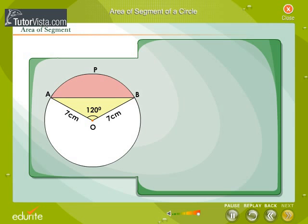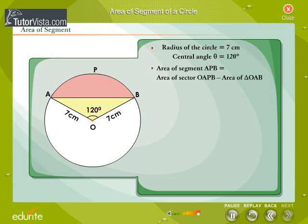Let's find the area of a segment, given the radius of the circle as 7 cm and the central angle as 120 degrees. Area of segment APB is equal to area of sector OAPB minus area of triangle OAB.